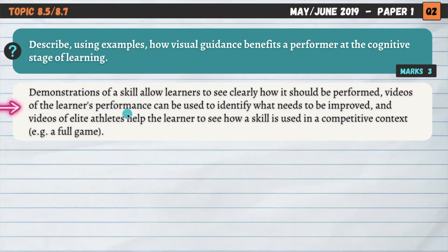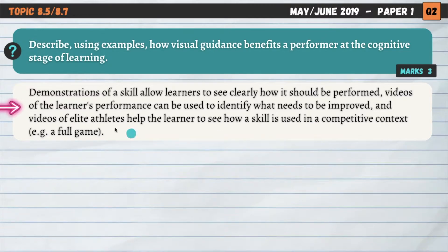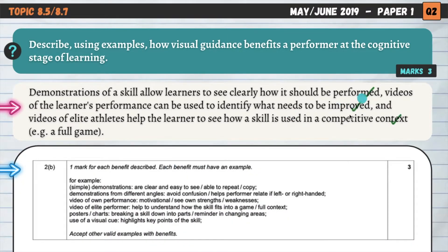Videos of a learner's own performance can be used to identify what needs to be improved. If we're making mistakes as a beginner, we might not even know it — watching video helps us see those mistakes so we can take steps to resolve them. Videos of elite athletes help the learner see how a skill is used in a competitive context, for example a full game. So three marks awarded there.